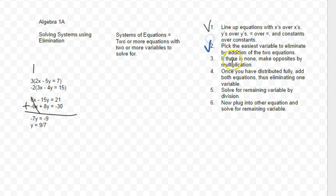So I picked the easiest one, I just picked x because it's easiest. If there is none, make opposites by multiplication. I did that in this step right here. Once you've distributed fully, add both together. That's the hardest part of elimination. And now it's just solved for the remaining variable. We did that by division.